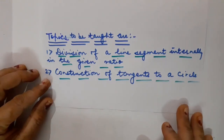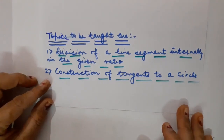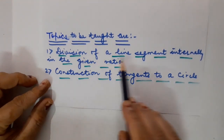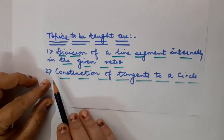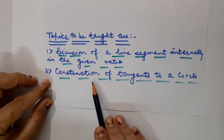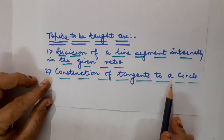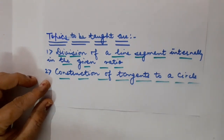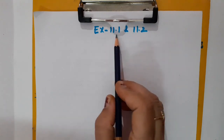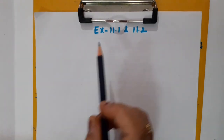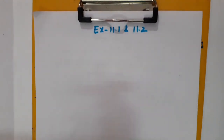The topics I am going to cover today are: Number 1, how to divide a given line segment internally in the given ratio; and after that, how to construct tangents to a circle. Let us start today's class with the very first topic — division of a line segment internally. I am going to take the first question from Exercise 11.1.